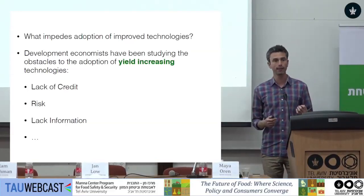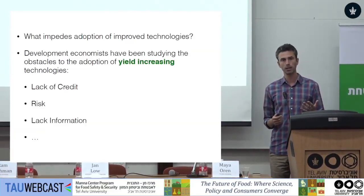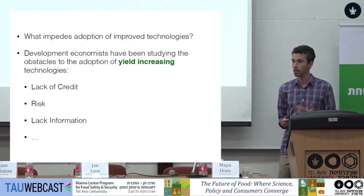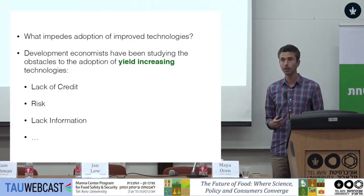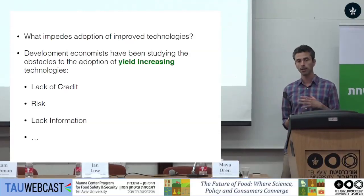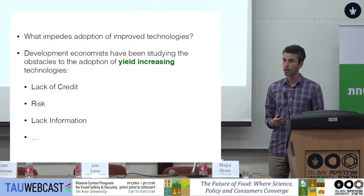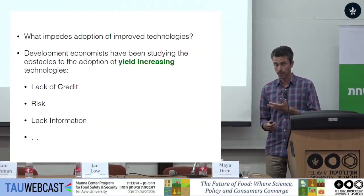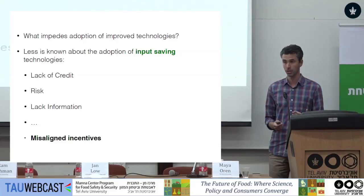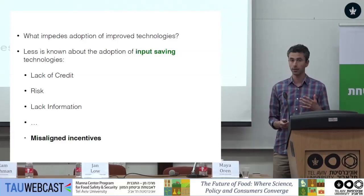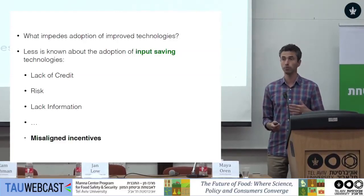So what are the factors preventing these technologies from being adopted on a large scale? Developing economists have spent a couple of decades studying this intensively. We know there are issues related to access to finance, the risks smallholders are facing, and the difficulties of accessing reliable information — all of which prevent them from adopting yield-increasing technologies. But we know much less about technologies that specifically save inputs or make input use more efficient. It's very likely that many of the same barriers apply.